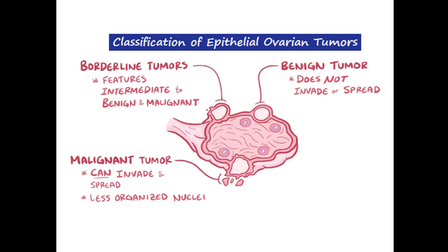A third class is known as the borderline tumors. These sometimes resemble benign tumors and sometimes show dysplasia and aneuploidy, representing pre-malignant situations. Some borderline tumors may resemble benign tumors, while others show histological changes resembling malignant tumors.